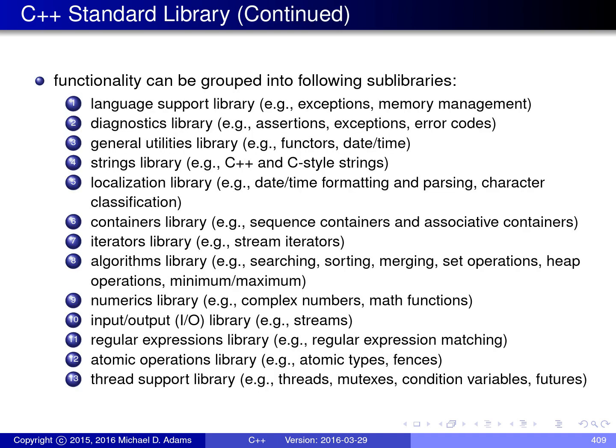The functionality in the standard library can be partitioned into a number of sub-libraries or sub-components. The first is the language support library, which provides some basic core-level support relating to language features like exceptions and memory management. The diagnostic library provides functionality useful for debugging — things like the assert macro. The general utilities library provides a number of different general purpose utilities such as functors that are useful in a number of different places in the standard library.